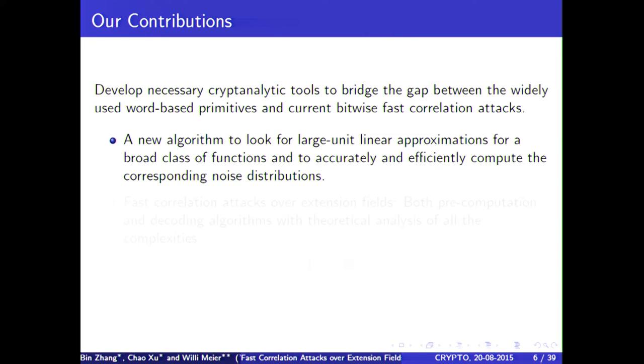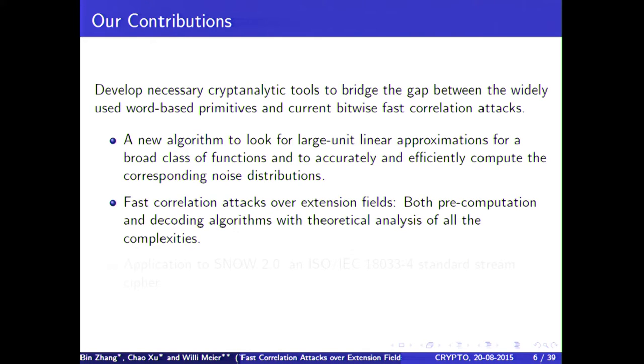How can fast correlation attacks be extended to larger units so that they adapt better to word-oriented primitives? Our aim is exactly to give a comprehensive answer to this problem. We have to develop the necessary cryptanalytic tools to bridge the gap between the widely used word-based primitives and the currently available bitwise fast correlation attacks. We develop a new algorithm to look for large unit linear approximations for a suitable class of functions and to efficiently compute the corresponding noise distributions. Then we come up with fast correlation attacks over extension fields. Fast correlation attacks have two steps. We have to first generate parity checks as of good quality as possible, and then we have to decode a kind of linear code.